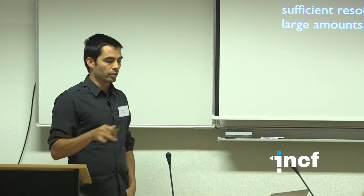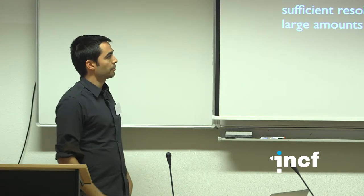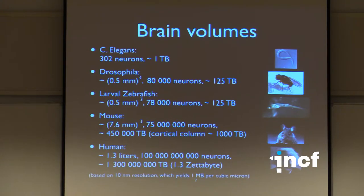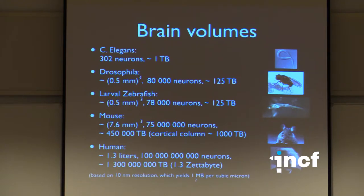We had serial-section electron microscopy with enough resolution, but the problem is it produces an incredibly large amount of data. Consider a resolution of 10 nm isotropic — storing just one cubic micron requires one megabyte. For C. elegans, the first organism whose connectome was completely reconstructed with 302 neurons, storing the whole worm at that resolution would require one terabyte of hard drive — which doesn't sound bad, but that's just for storage, not any processing.